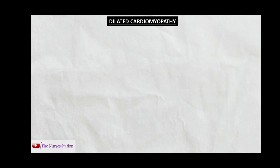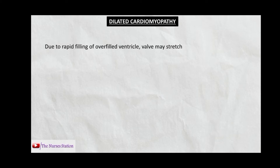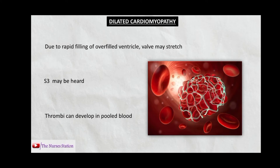Since the heart cannot pump enough blood, it tries to increase cardiac output by overfilling the ventricle so more blood is present during systole. Due to this rapid filling of the overfilled ventricle, the valve between the ventricle and atrium may stretch, giving rise to an extra heart sound called S3. Also, the pooled blood inside these dilated ventricles may increase the chance of thrombi formation.